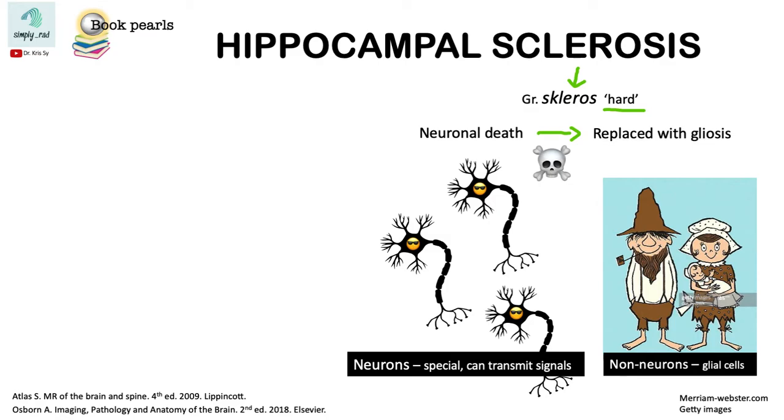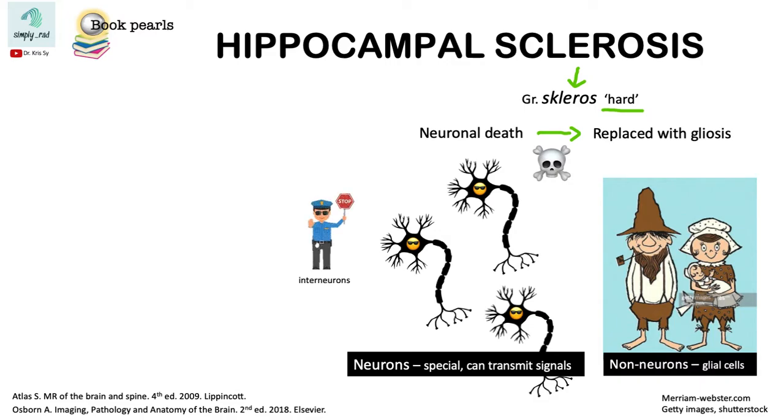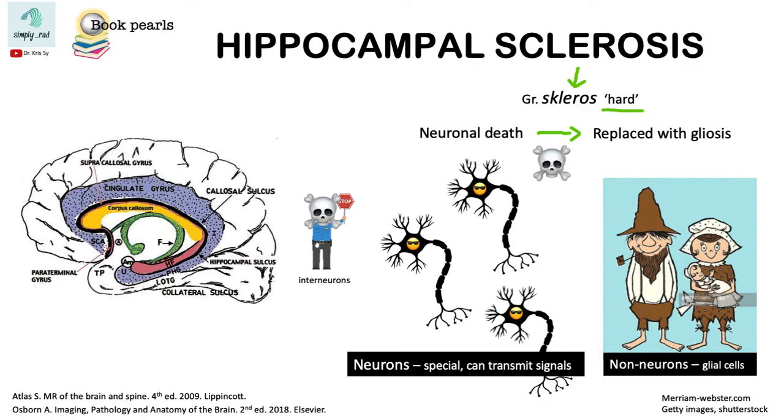So one of the important neurons in the Hippocampus are the interneurons. They balance the excitatory and inhibitory signals from the medial temporal lobe, which has many connections to other parts of the brain. So when interneurons are lost, these signals are no longer inhibited, thus producing the seizures.